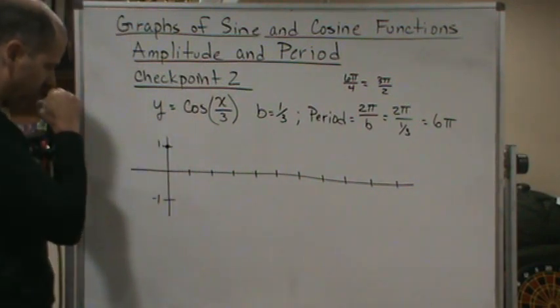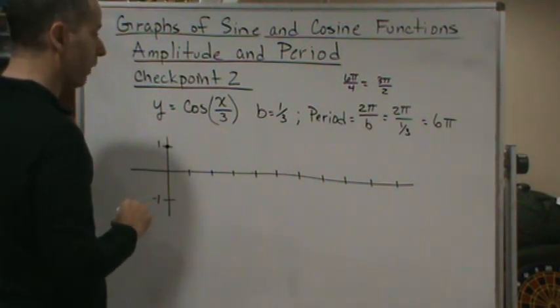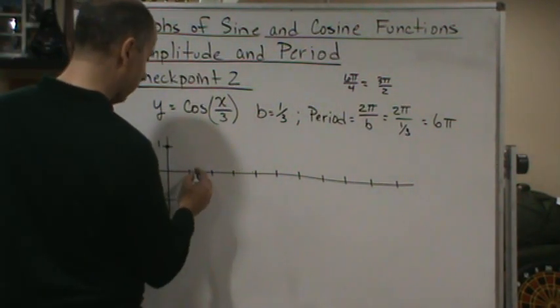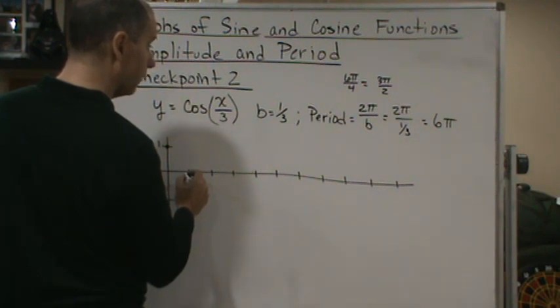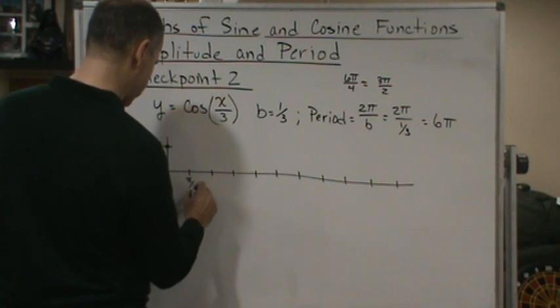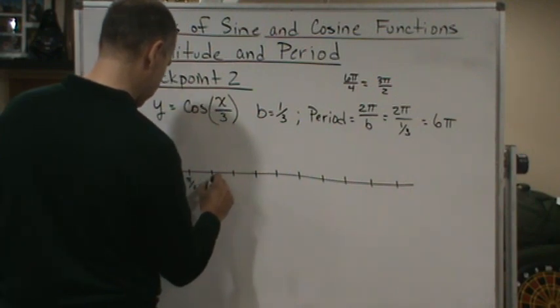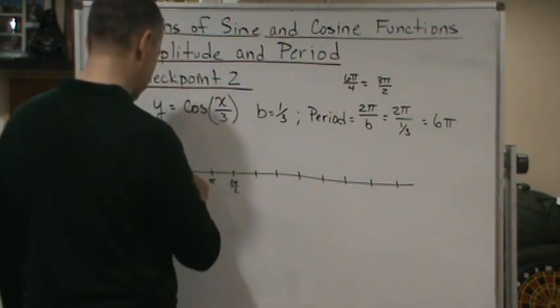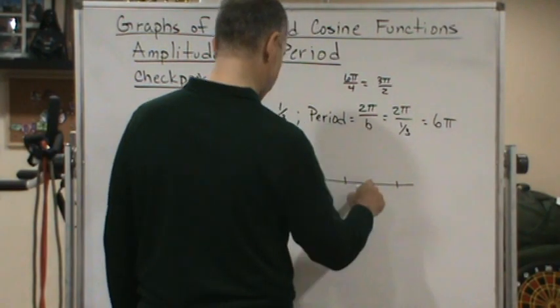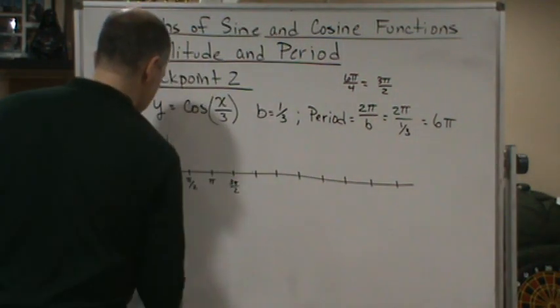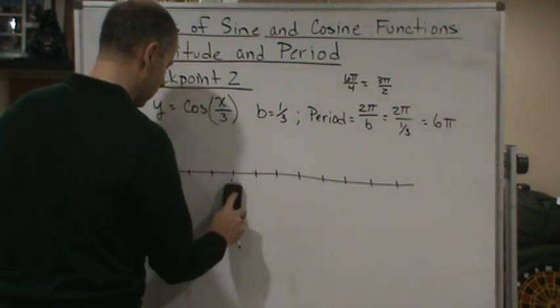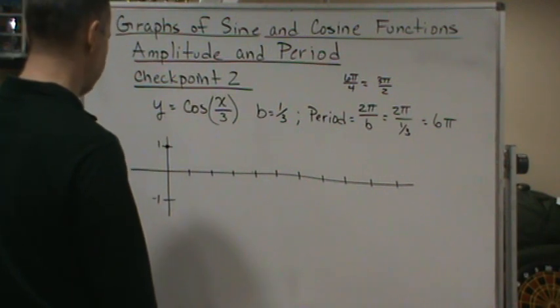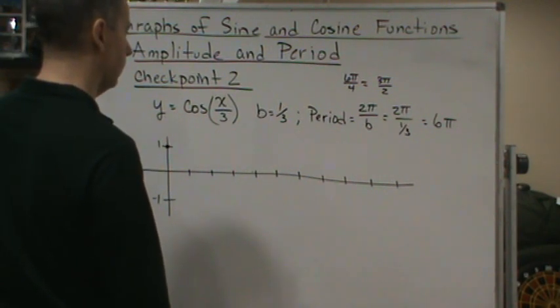Let's see here, I hope I have enough room. I think 6π—let's see if I have enough room. We got one, two, three, one, two, three, one, two, three—yeah, we're not going to have enough room. So let's do this, let's do each tick mark...